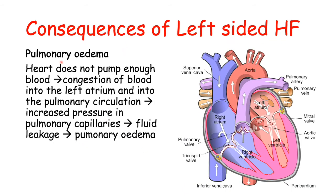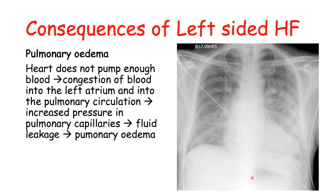Another consequence of left-sided heart failure is pulmonary edema, which is also a major sign of heart failure. If the left ventricle is not pumping enough blood to the aorta, we get congestion of blood because blood is still coming in from the pulmonary veins. Blood ends up back-flowing into the lungs and leaking into the interstitium and alveoli, causing pulmonary edema. Patients with pulmonary edema present with difficulty breathing and orthopnea — difficulty breathing when lying down — because gravity naturally pulls more blood into the lungs when supine.